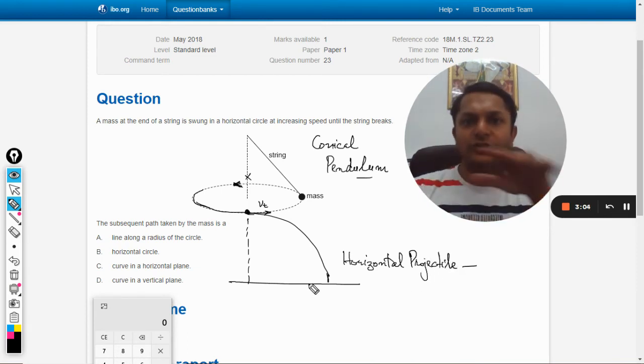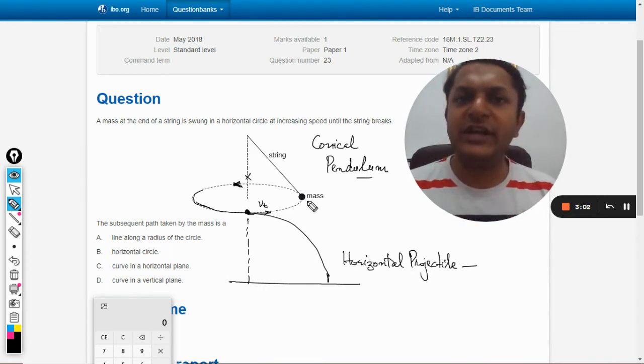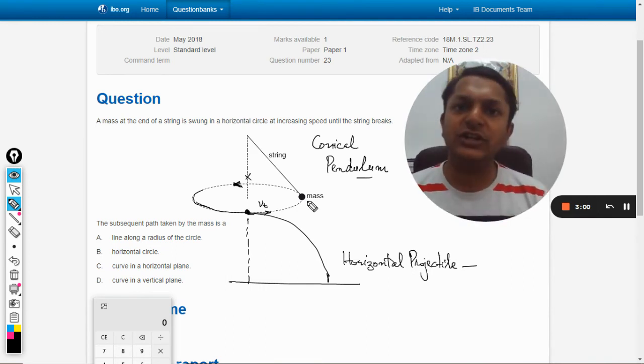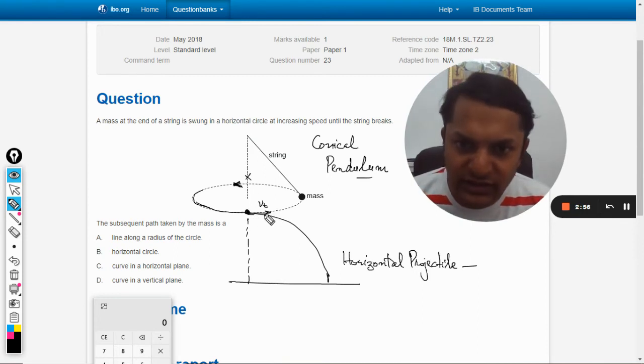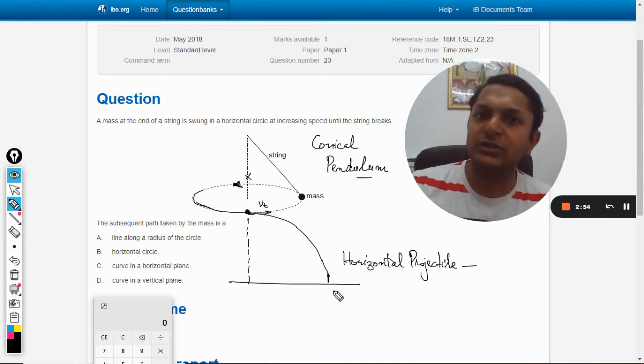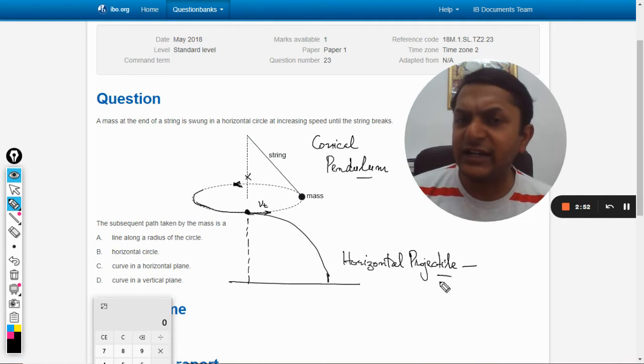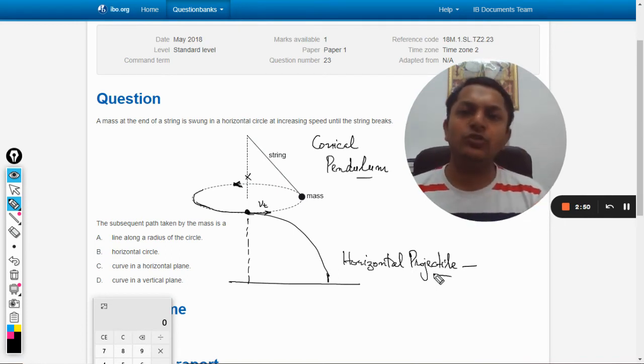And this horizontal projectile means the projectile motion which was earlier horizontal. So this was horizontal earlier, and now it is a projectile motion. And what is the definition of projectile motion?